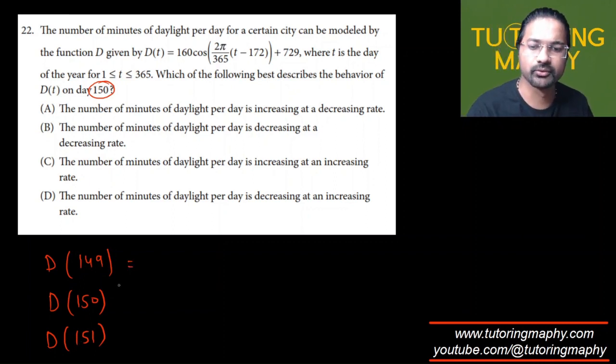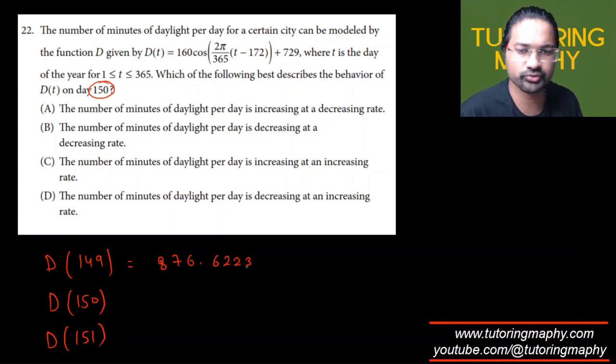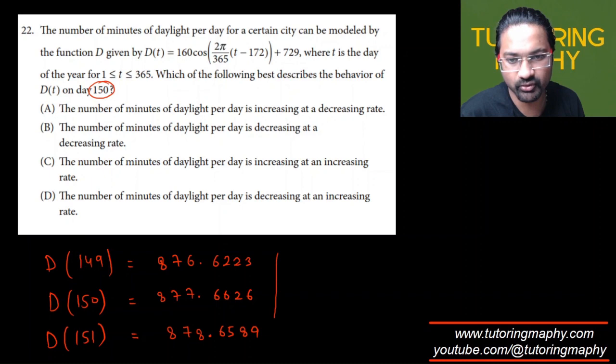Alright, so I just found all the values. D(149) is coming as 876.6223, D(150) is coming as 877.6626, and D(151) is 878.6589. Clearly the value of D is increasing, which means that it is increasing, not decreasing.